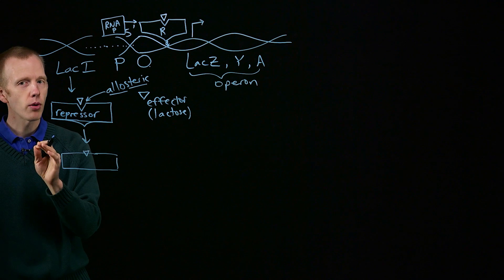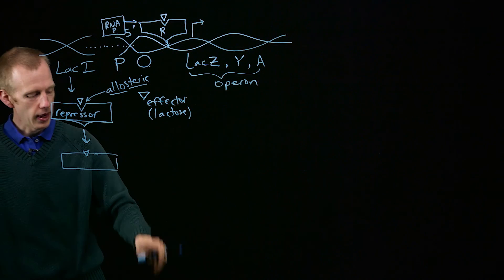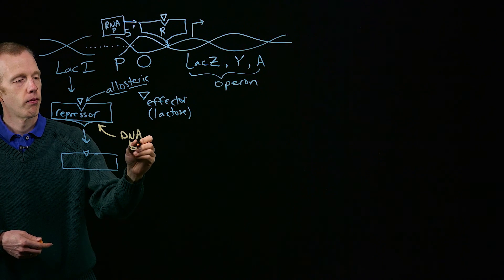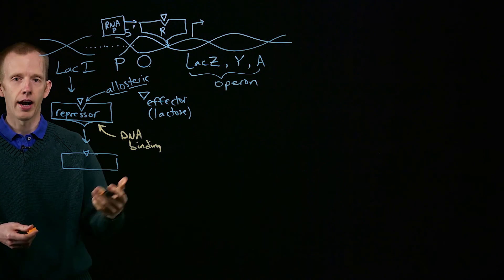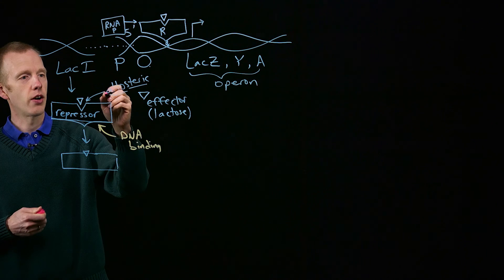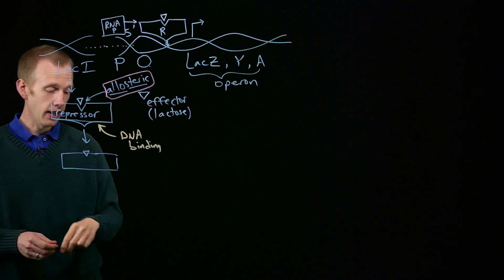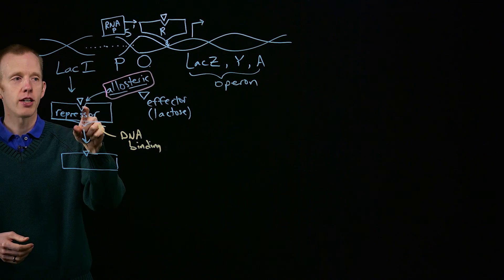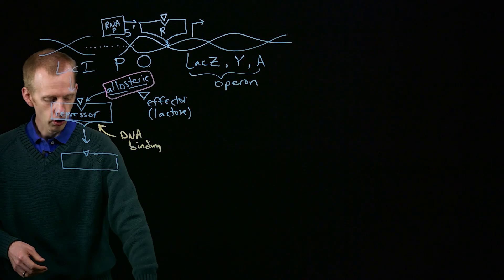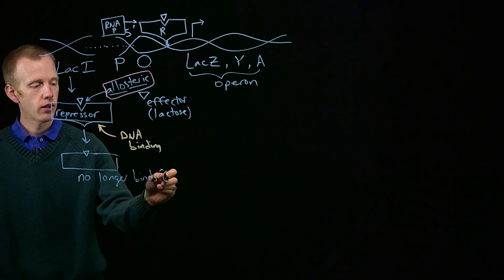Most proteins that regulate DNA transcription have two different domains: a DNA binding domain, where the protein recognizes and binds a specific DNA sequence, and an allosteric site that regulates the shape of the protein. When a small molecule effector is bound, that changes the shape of the protein — allosterically — so that it no longer binds the operator, lacO.